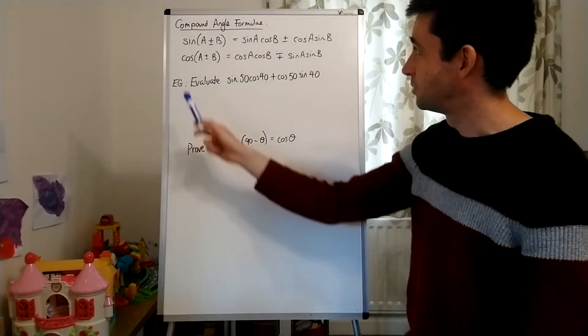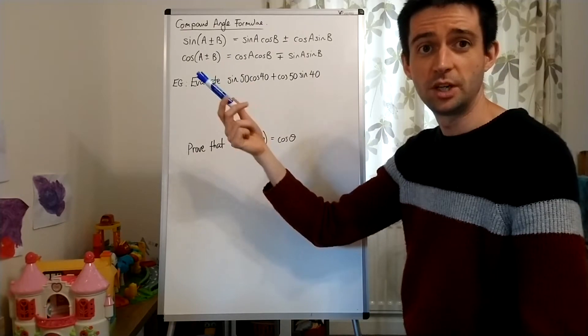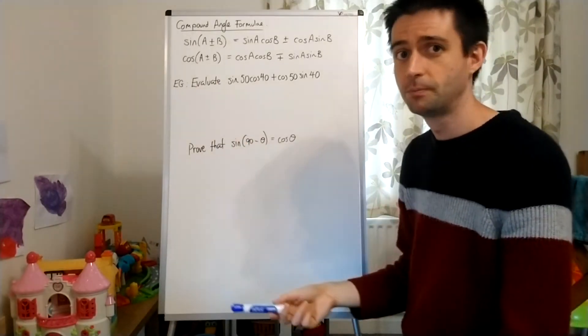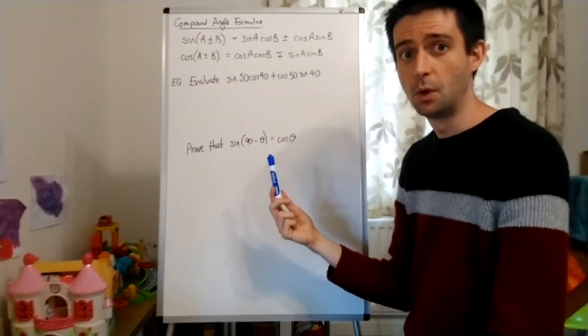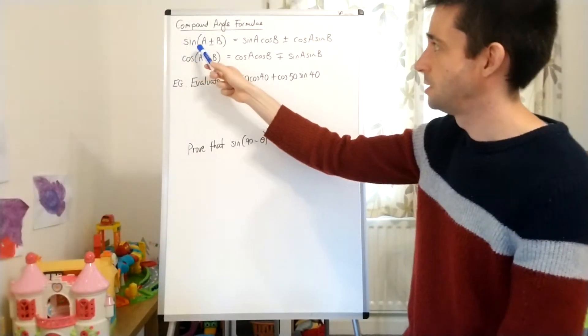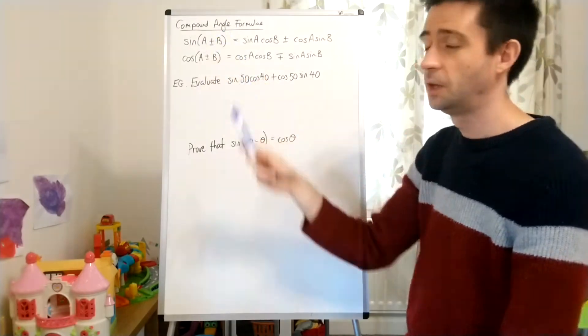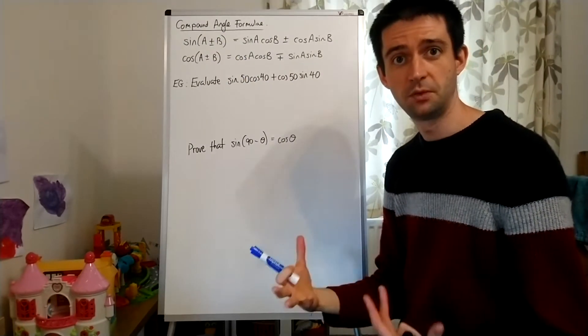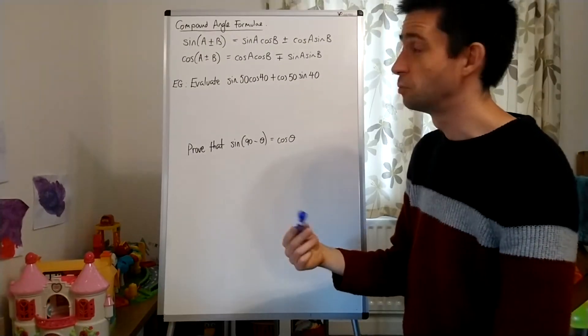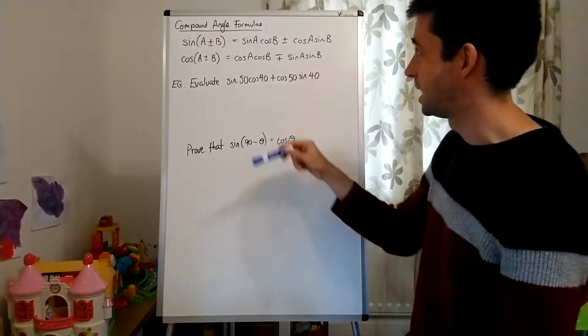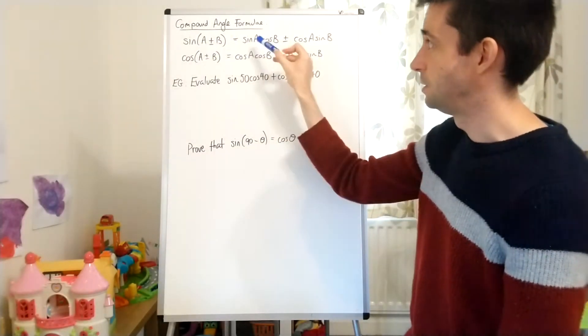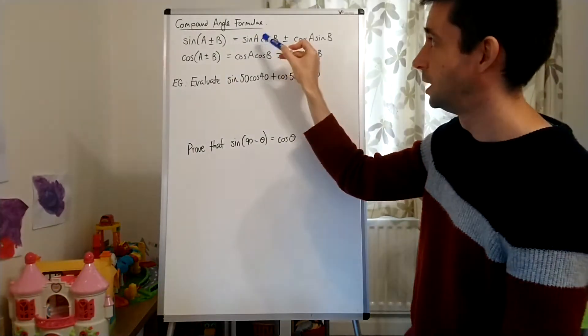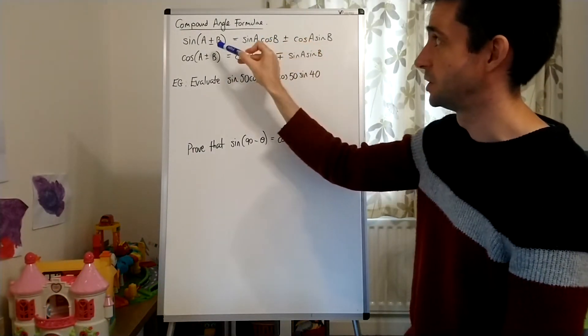We have two here that are given on the formula sheet, one for sine and one for cos. One of those I've written about how they appear on the formula sheet. If you have sine of A plus B, where A and B are two different angles, it is possible to write that in expanded form as sine A cos B, the first value, sine of the first angle, multiplied by cos of the second angle.